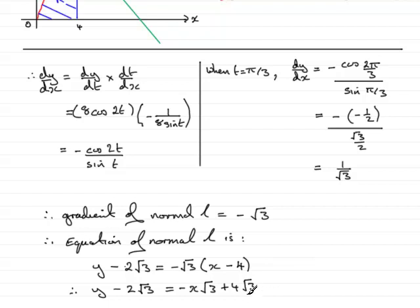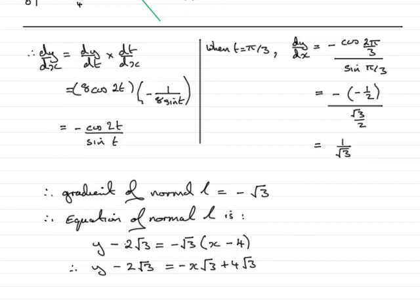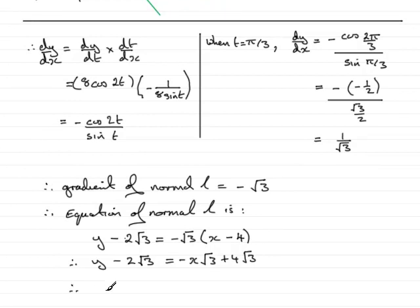So, by adding 2 root 3 to both sides, what we have, is that therefore, y equals minus x root 3, plus, we have 4 root 3 here, and another 2 root 3, so that's going to be 6 root 3. So, we have the equation of the line L in the form that they wanted, and that brings us to the end, then, of this part of the question.